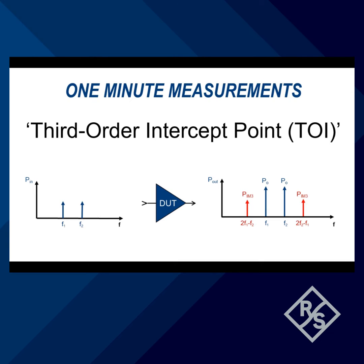TOI, also known as IP3, or two-tone intermod, is a measurement of the third order intermodulation, or IM3 distortion, of an active device, such as an amplifier.